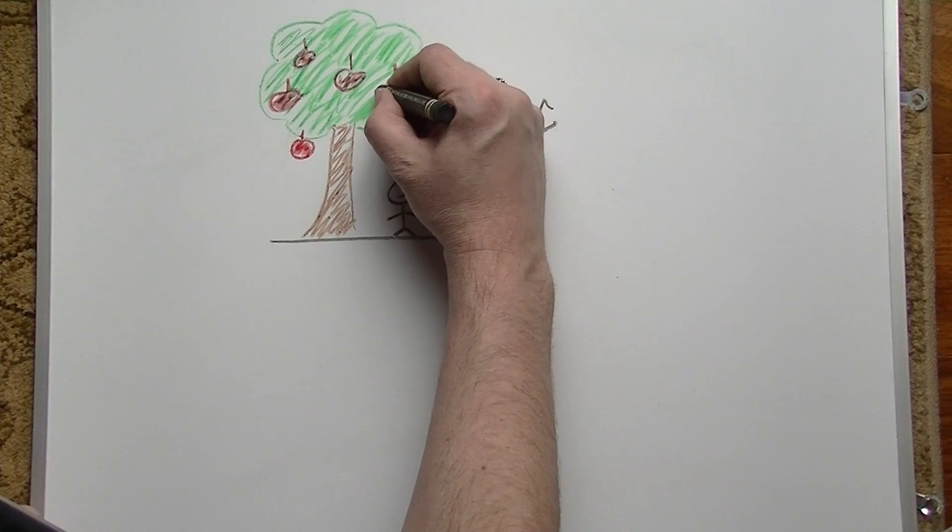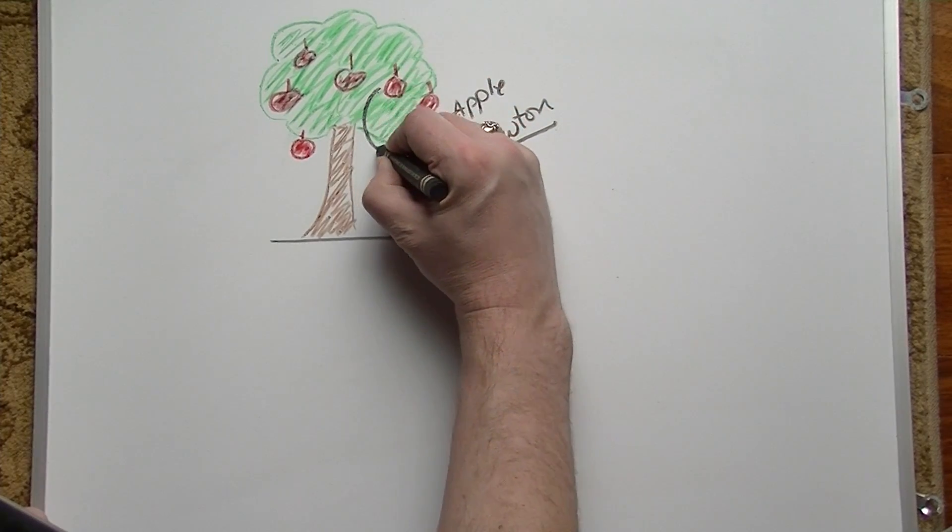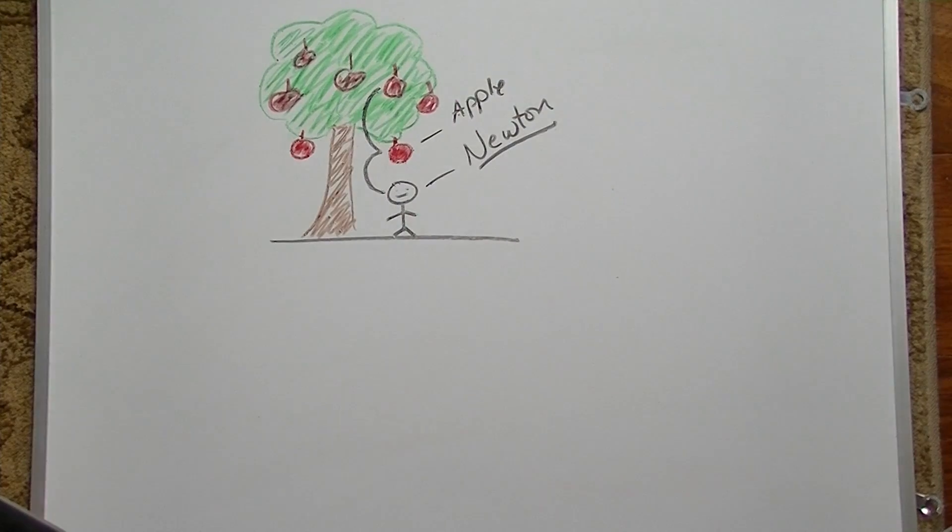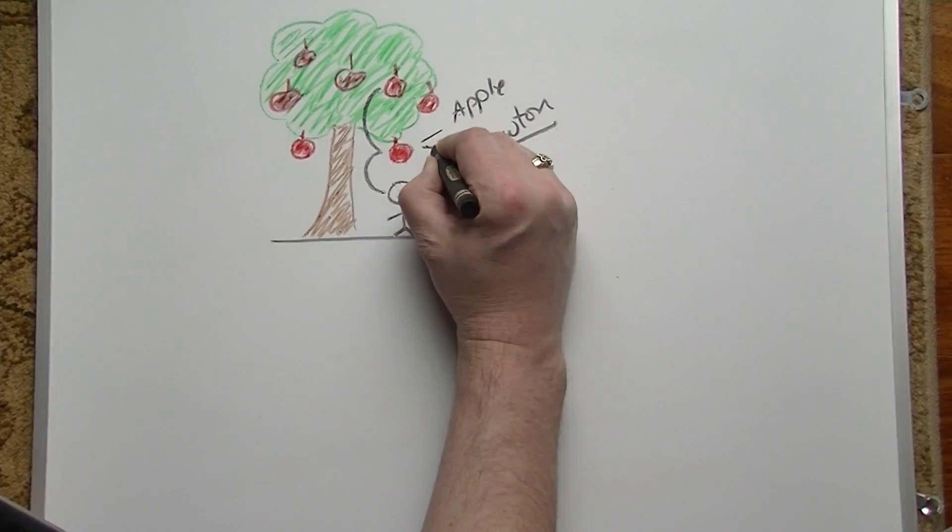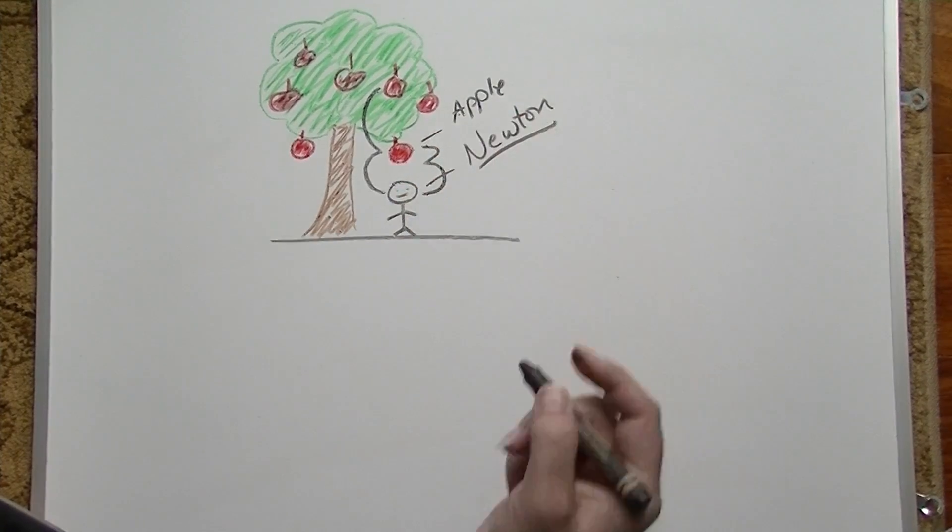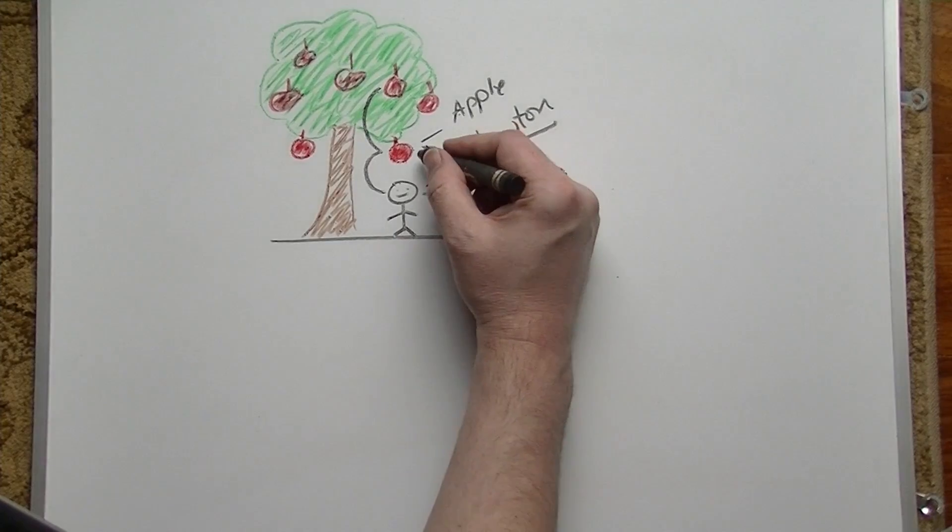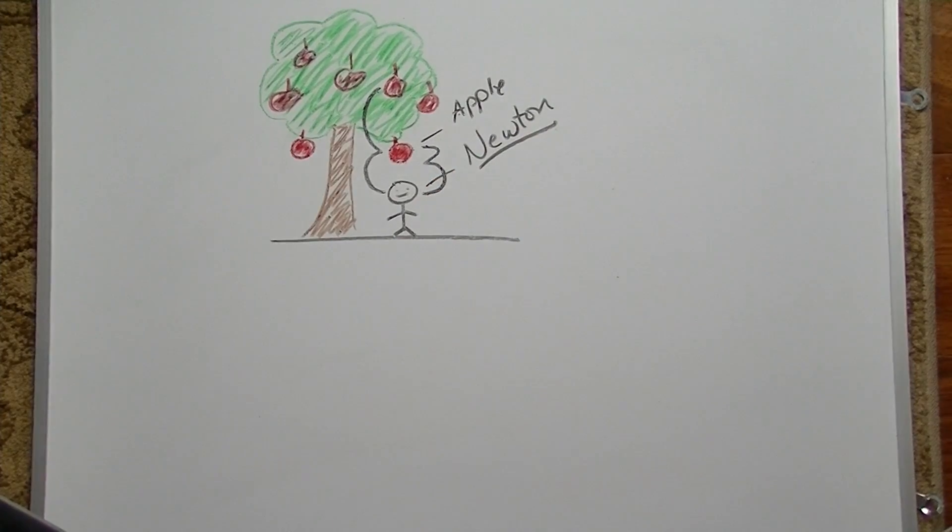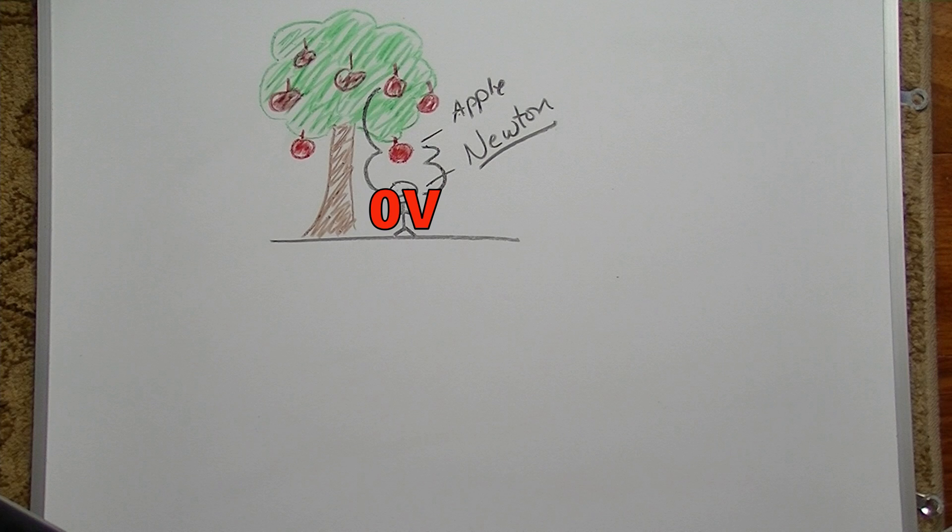If the distance of the apple above Newton's head is increased, the potential energy increases. This increase in height and thus potential energy is like an increase in voltage inside an electrical circuit. Conversely, if the apple is lowered closer to Newton's head, the potential energy between them is decreased. This can be thought of as a lower voltage in an electrical circuit. In this example, Newton's head could be thought of as the circuit ground, and the apple's potential energy could be thought of as some positive voltage above his head.